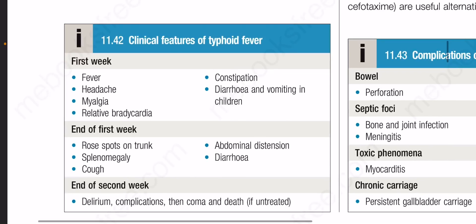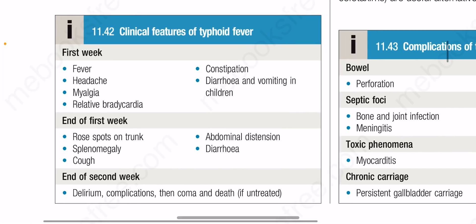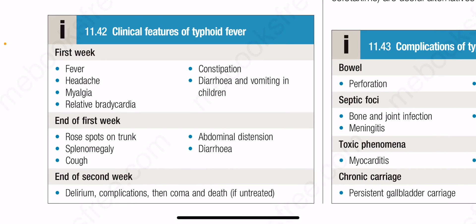The box summarizing clinical features of typhoid fever shows: in the first week — fever, headache, myalgia, relative bradycardia, constipation, and in children diarrhea and vomiting. At the end of the first week — rose spots on trunk, splenomegaly, cough, and abdominal distension with diarrhea. At the end of the second week — delirium, complications, then coma and death if untreated.